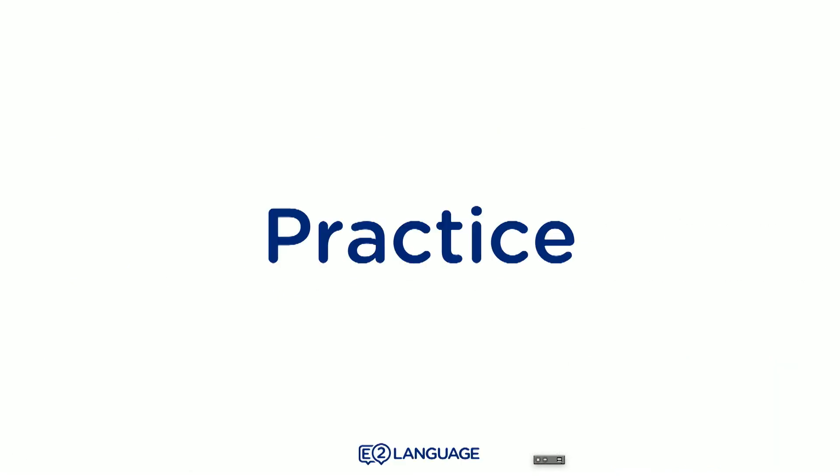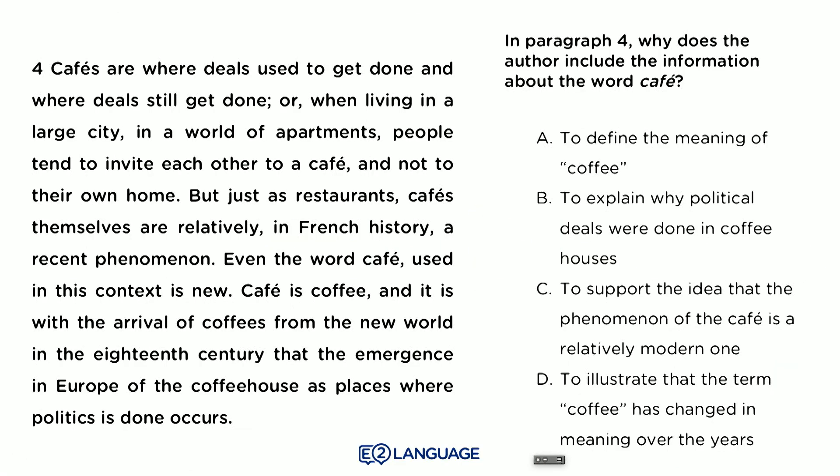Let's do a little bit of practice now — it's your turn. Read the question prompt and find that particular phrase in the passage, then choose from A, B, C, or D the reason why the author included that information. Pause the video and give yourself a minute.